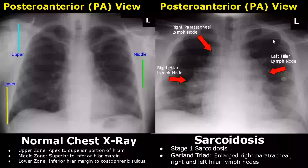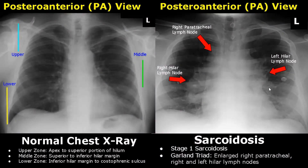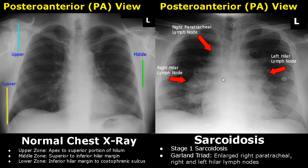In patients with sarcoidosis, pulmonary involvement is common. It has 5 stages from 0 to 4. In stage 0, the x-ray is normal. In stage 1, it has a specific feature called the garland triad, which has an enlarged right paratracheal lymph node and also enlarged right and left hilar lymph nodes. These enlarged lymph nodes will not connect with the cardiac silhouette — we can see the cardiac contours and they are not intermixed with the hilar lymph node opacities.